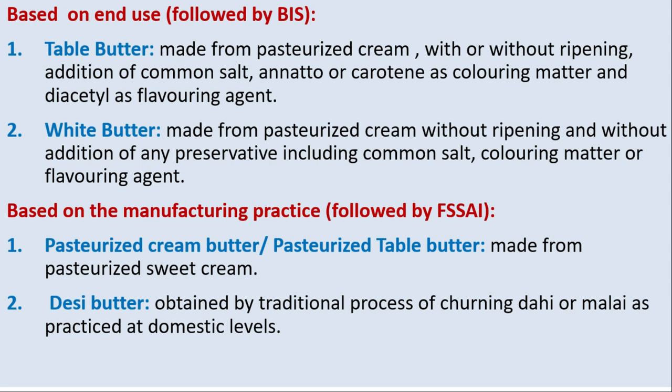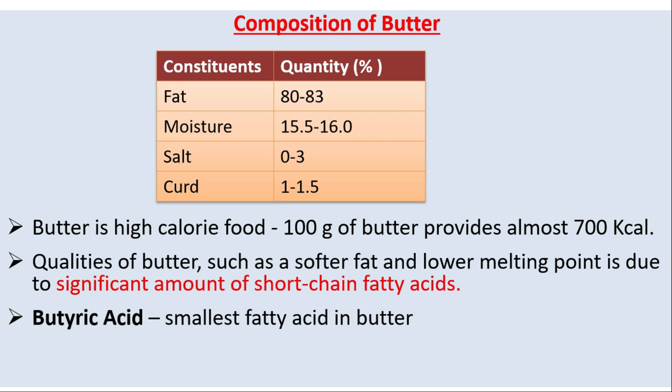Pasteurized cream butter is made from pasteurized sweet cream. Desi butter is obtained by the traditional process of churning dahi or malai as practiced at domestic levels. Composition of butter: fat 80–83%, moisture 15.5–16%, salt 0–3%, and curd 1–1.5%. Butter is a high-calorie food; 100 grams of butter provides almost 700 kilocalories of energy. Its softer fat and lower melting point are due to a significant amount of short-chain fatty acids; butyric acid is the smallest fatty acid in butter.